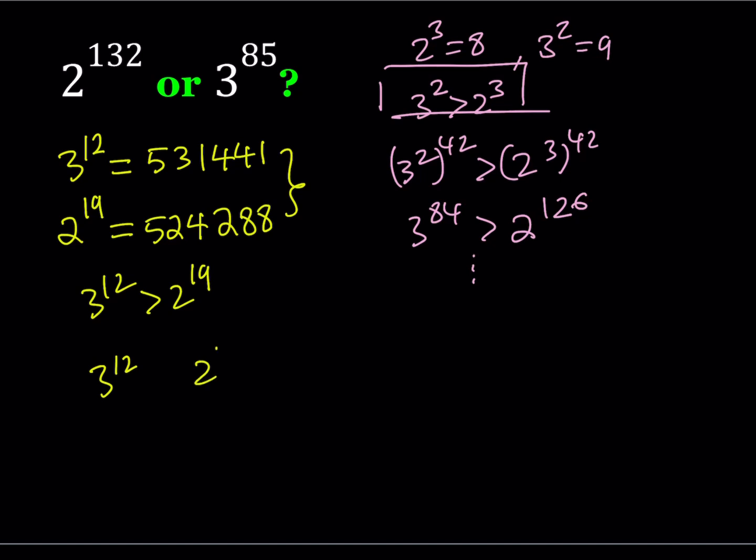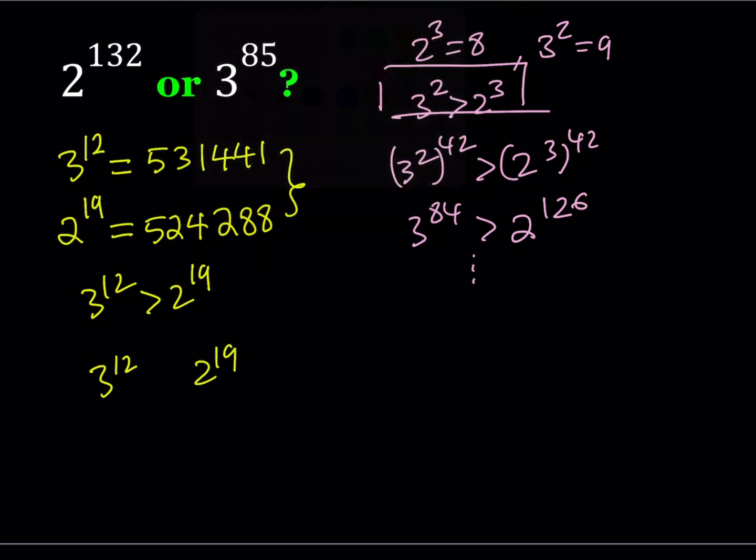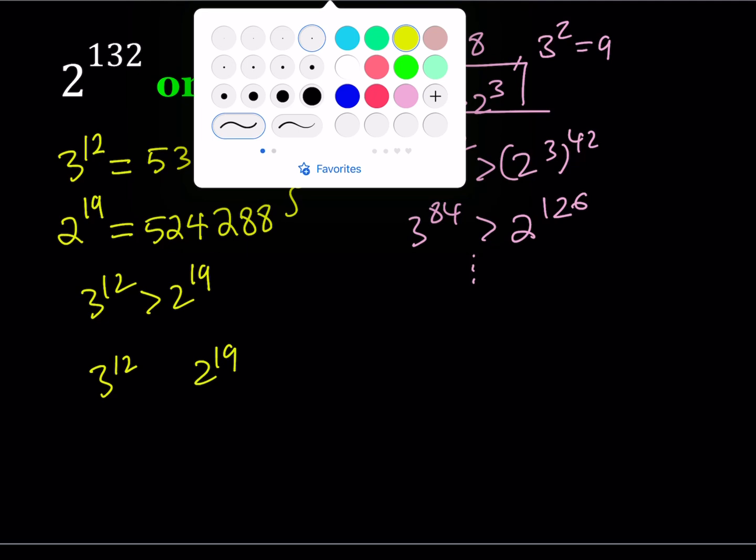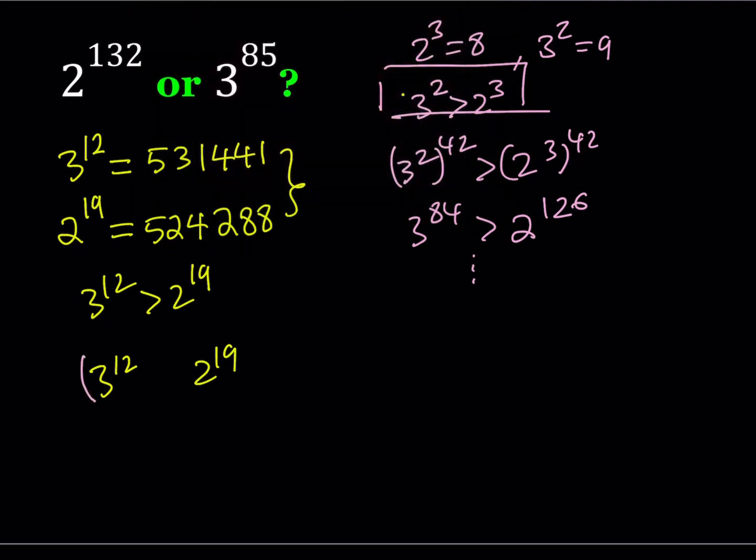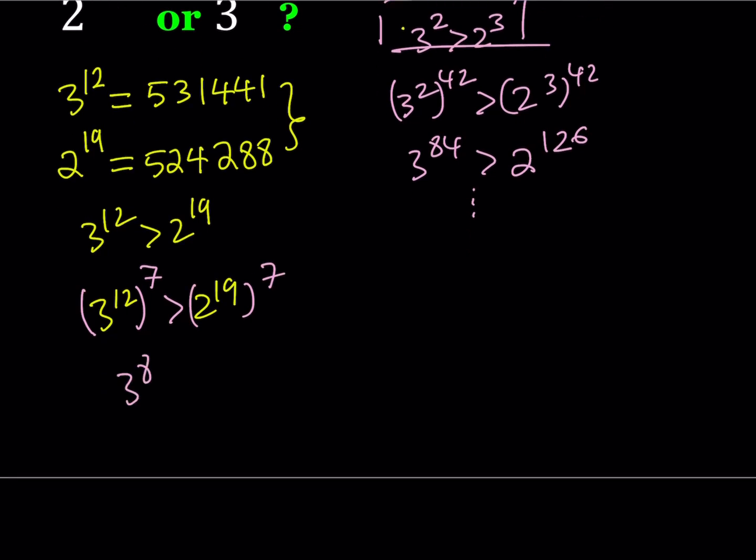3 to the power 12 and 2 to the power 19. I'm going to be raising both sides to the power 7. And of course, the inequality is going to be preserved and this is going to give us 3 to the power 84 is greater than, 19 times 7 is going to be 133.